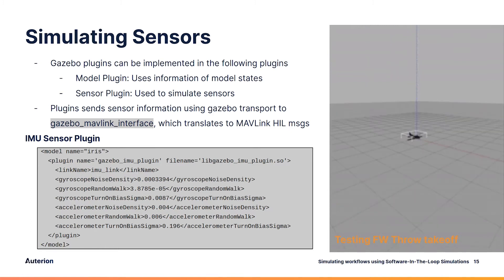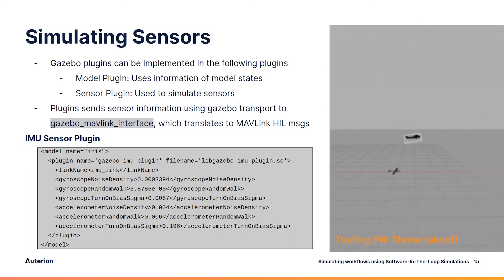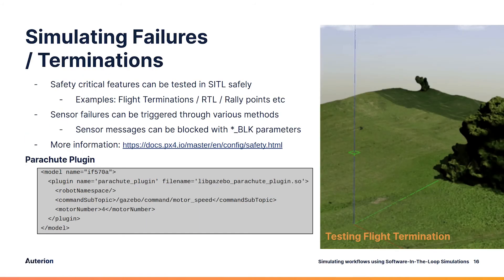Here is an example of the IMU sensor plugin, where you can configure various noise parameters of the gyroscope and accelerometer. As a result, you can simulate complex behaviors such as a fixed-wing catapult launch, a catapult takeoff, as you can see on the right.